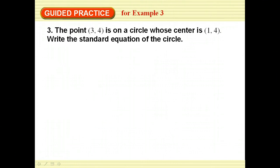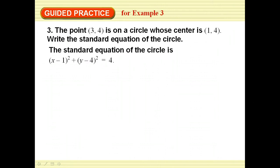The point (3, 4) is on a circle whose center is (1, 4). Write the standard equation of this circle — try this one yourself. The standard equation is x minus 1 squared plus y minus 4 squared equals 4. We find r by the distance formula: the square root of the change in x, which is 2 squared, plus the change in y, which is 0 squared. So r equals 2, and r squared equals 4.